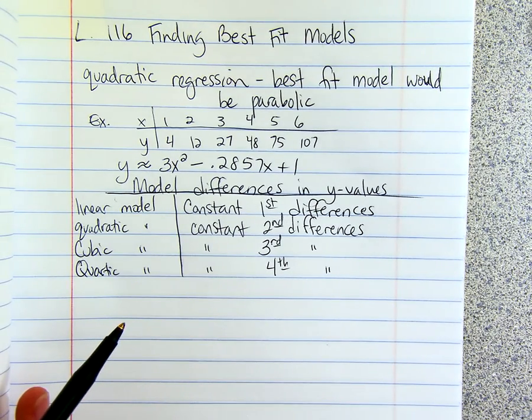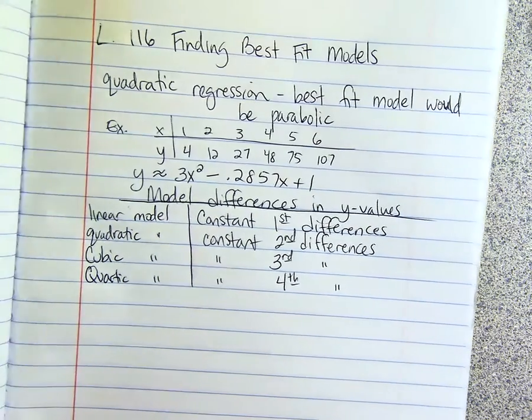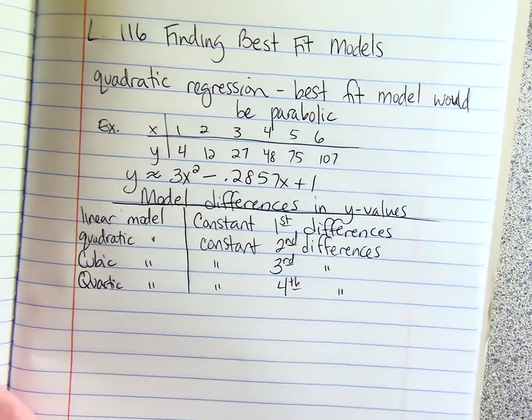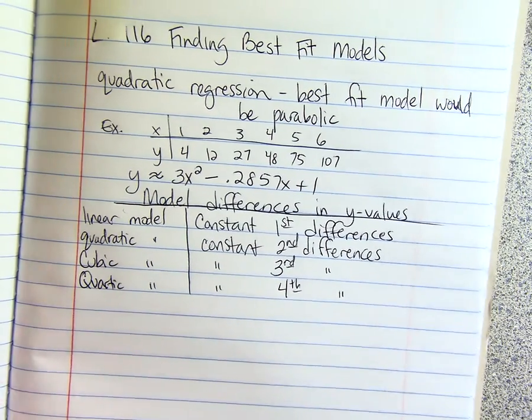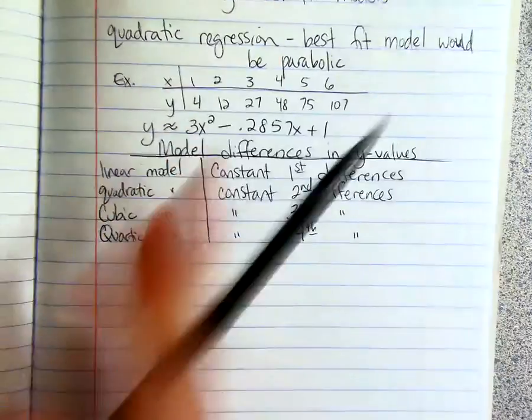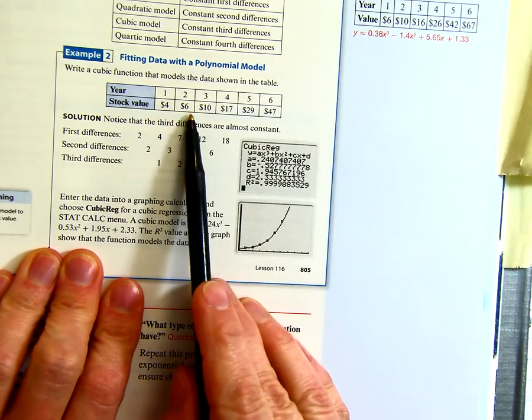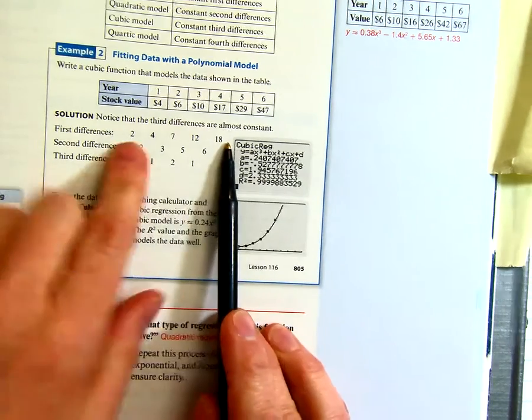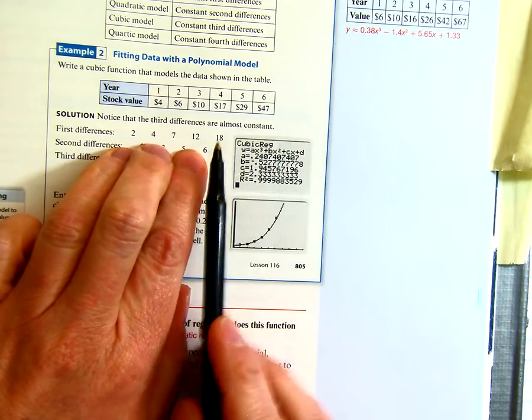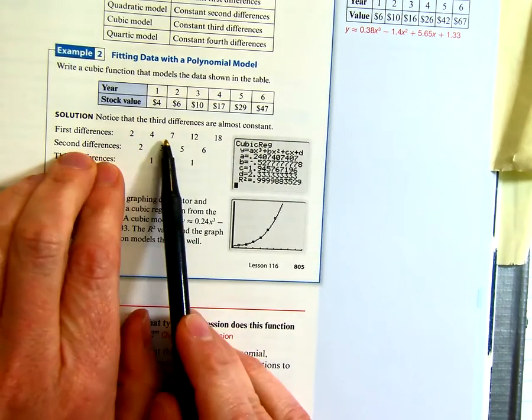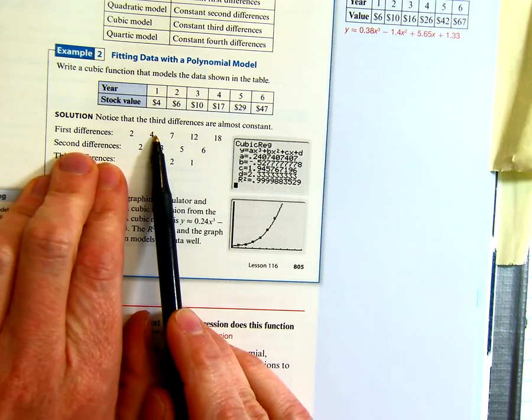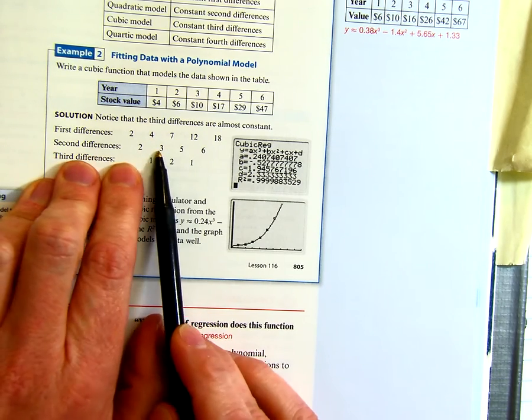Example 2, they have this cubic function, but you don't know it's cubic yet. So in example 2, if you take the difference of the y's, so 6 minus 2 is 2, 10 minus 6 is 4. Here's the first difference. You just took the difference of all the y's. The second difference is you're taking the difference of the differences. 4 minus 2 is 2, 7 minus 4 is 3.